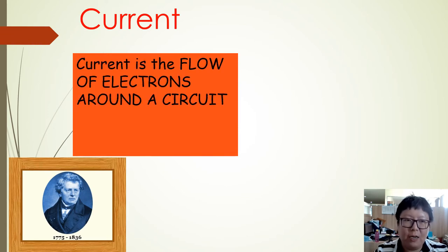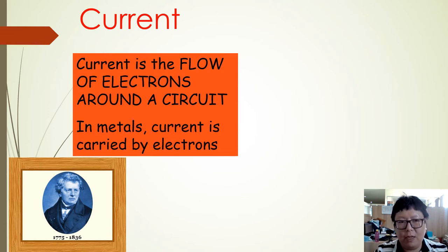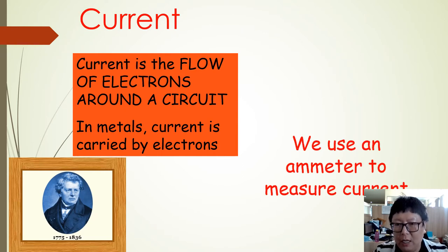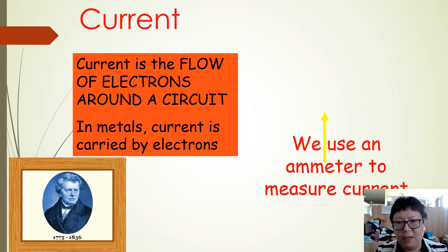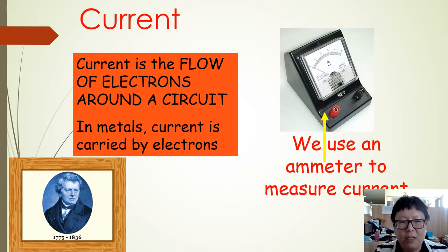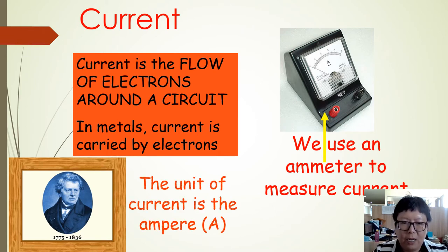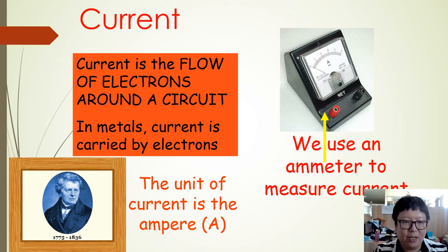How do you measure current in electronic circuits? The device used to measure current is the ammeter, or ampere meter. The unit of current is the ampere, which is taken from the name of the scientist shown in this picture. His name is used as the unit for current.